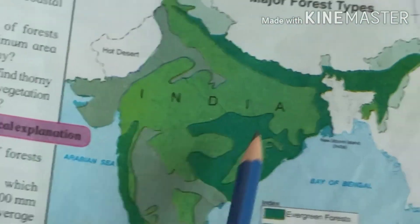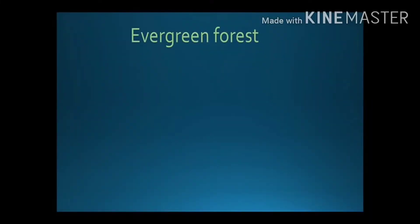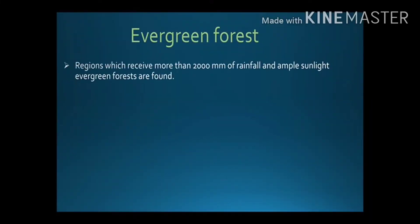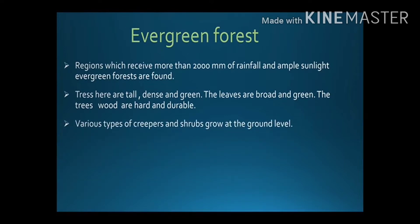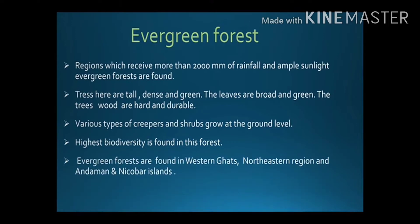Evergreen forests are found in regions receiving more than 2000 millimeters of rainfall with ample sunlight. Trees here are tall, dense, and green with broad leaves. The wood is hard and durable. Various creepers and shrubs grow at ground level, taking support of the trees. Evergreen forests have the highest biodiversity and are found in the Western Ghats, northeastern region, and Andaman and Nicobar Islands.